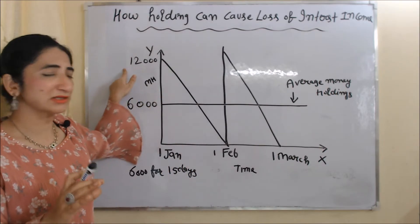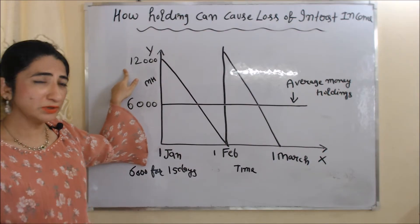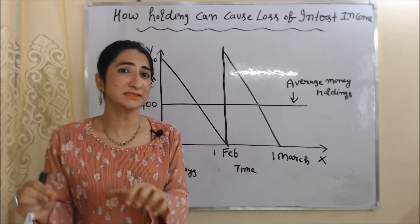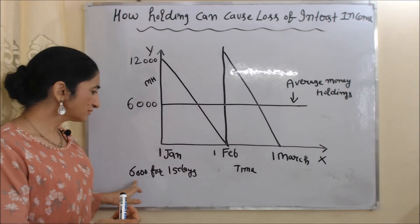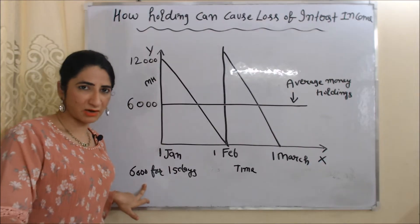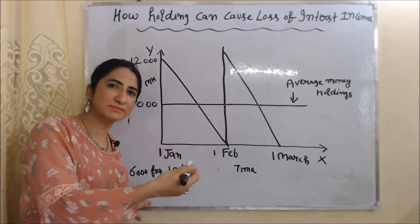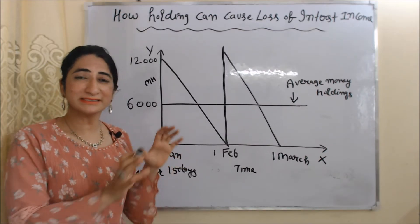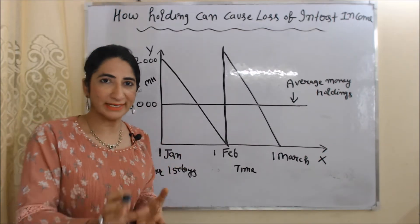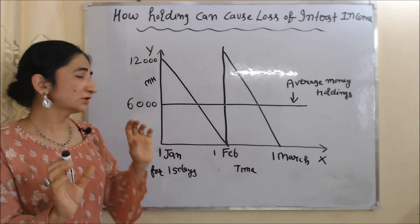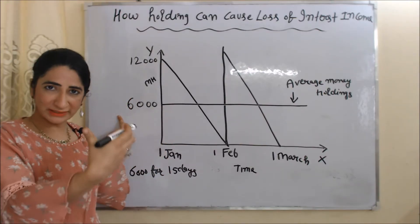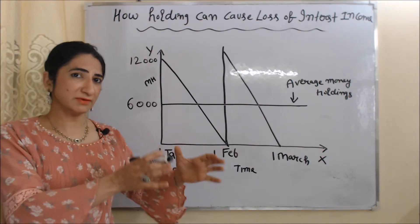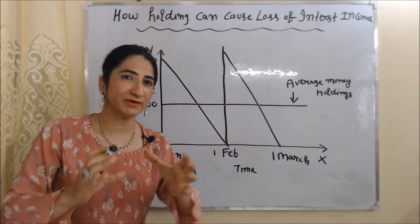According to Baumol, we need not withdraw this 12,000 rupees all at once, because we are not going to spend the whole 12,000 rupees in one day. For example, in the first 15 days you will spend 6,000 rupees, and in the next 15 days you will spend the remaining 6,000 rupees. That's why instead of withdrawing 12,000 rupees in one day, we can withdraw only 6,000 rupees for the first 15 days.